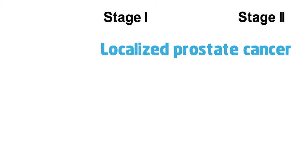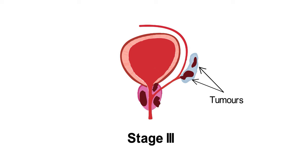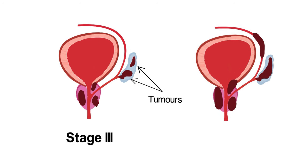Stage 3 or locally advanced prostate cancer is when the cancer has spread outside of the prostate to nearby areas of the body. Stage 4 or metastatic prostate cancer is when the cancer has spread to lymph glands or other parts of the body such as bones, liver, or lungs.